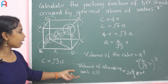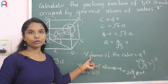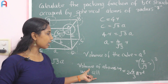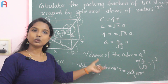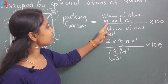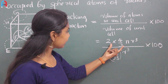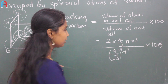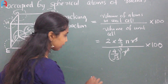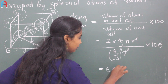Packing fraction equals volume of atoms in the unit cell divided by volume of the unit cell, times 100. Substituting the values, R cubed cancels out, and the answer comes to 68 percent.